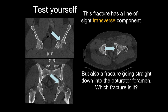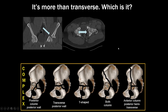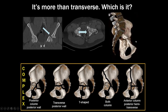Test yourself: this fracture has a line-of-sight transverse component going all the way from front to back, but on the axials there's an additional fracture going straight down into the obturator foramen. Line-of-sight component plus additional fracture into the obturator foramen — therefore this is a complex T-shaped fracture.